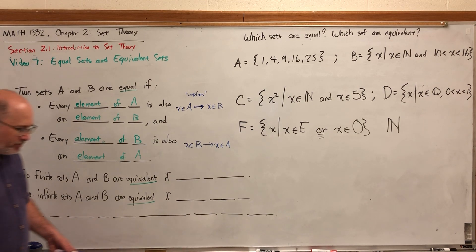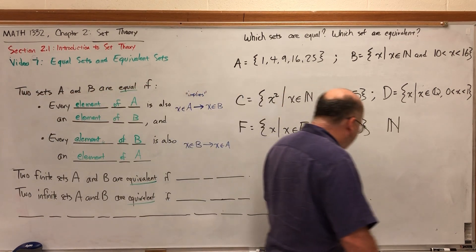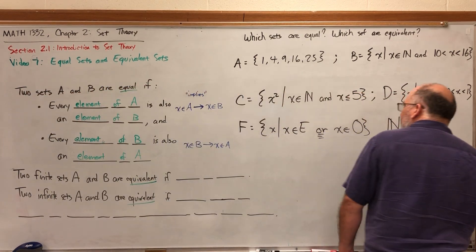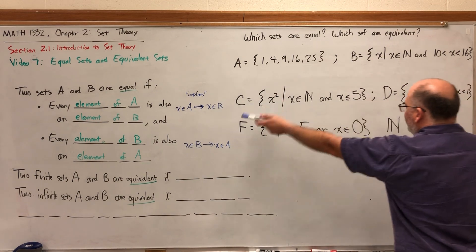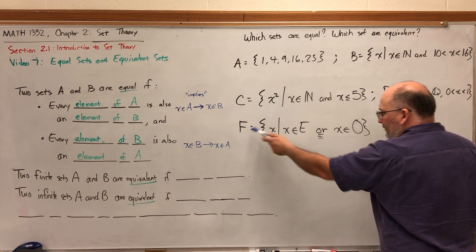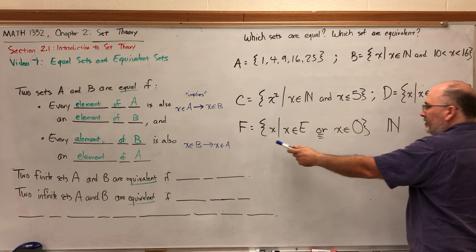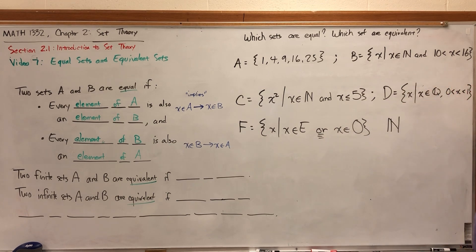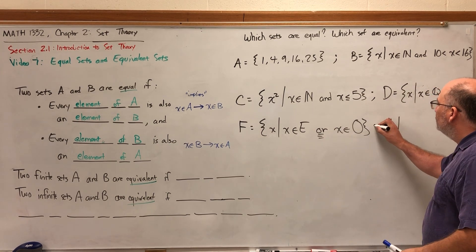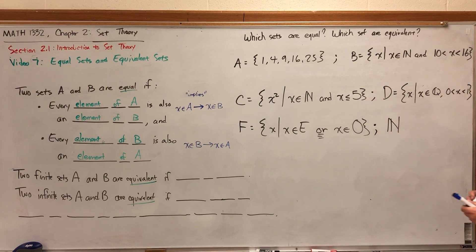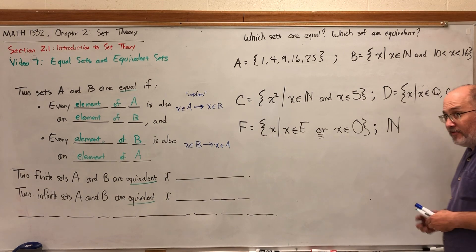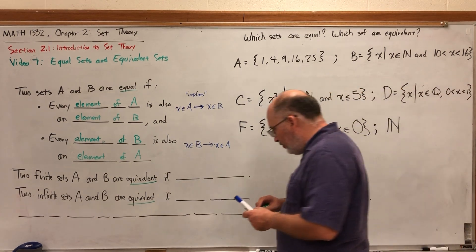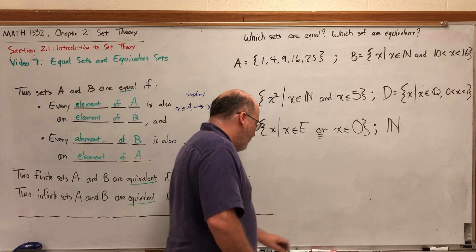Before we get to equivalent, let's take a look at some examples. I've got six sets listed: A, B, C, D, F, and the natural numbers. We're going to answer two questions: which sets are equal, and which sets are equivalent? We can answer which sets are equal right now. Equal basically means they contain the exact same elements.